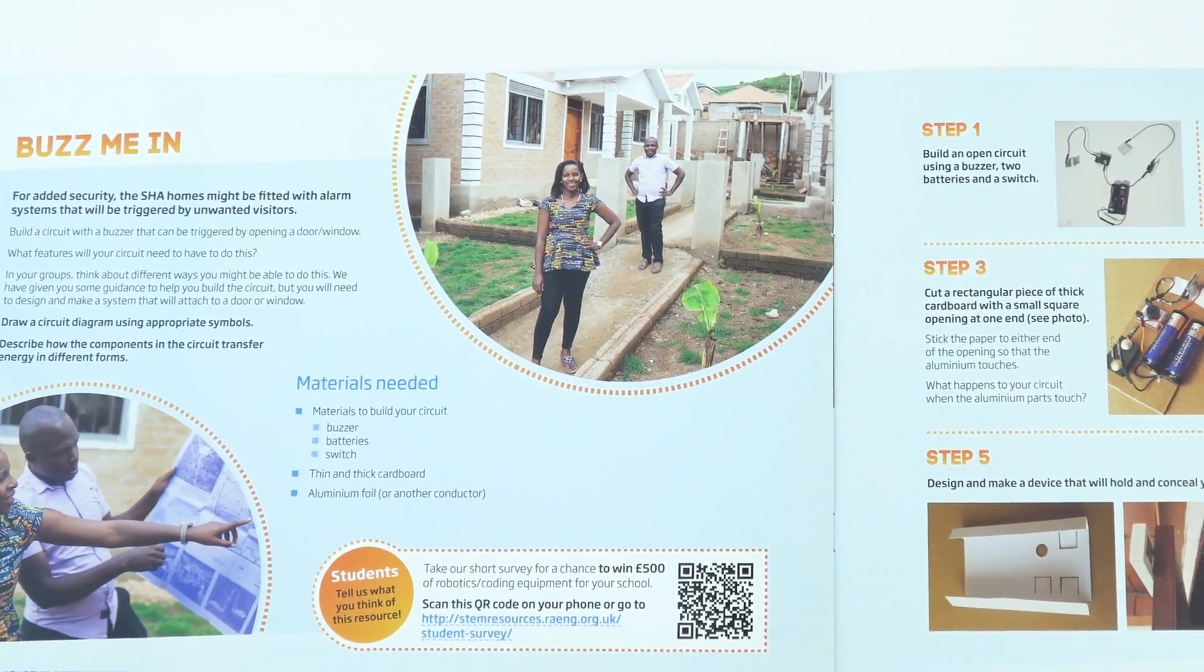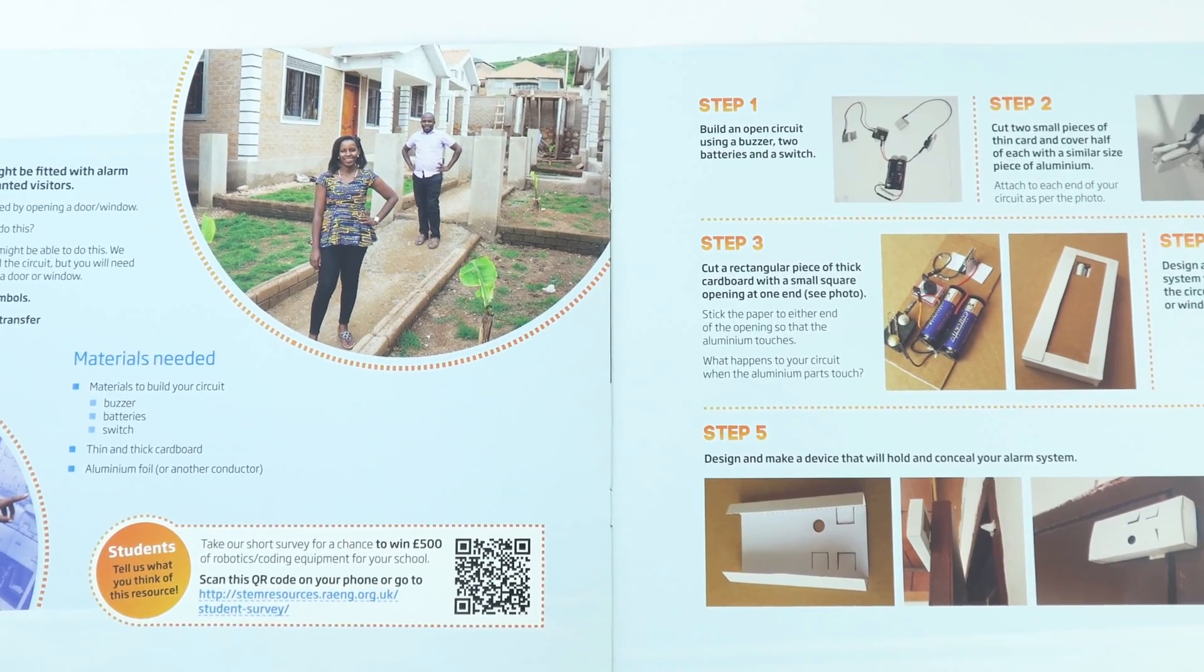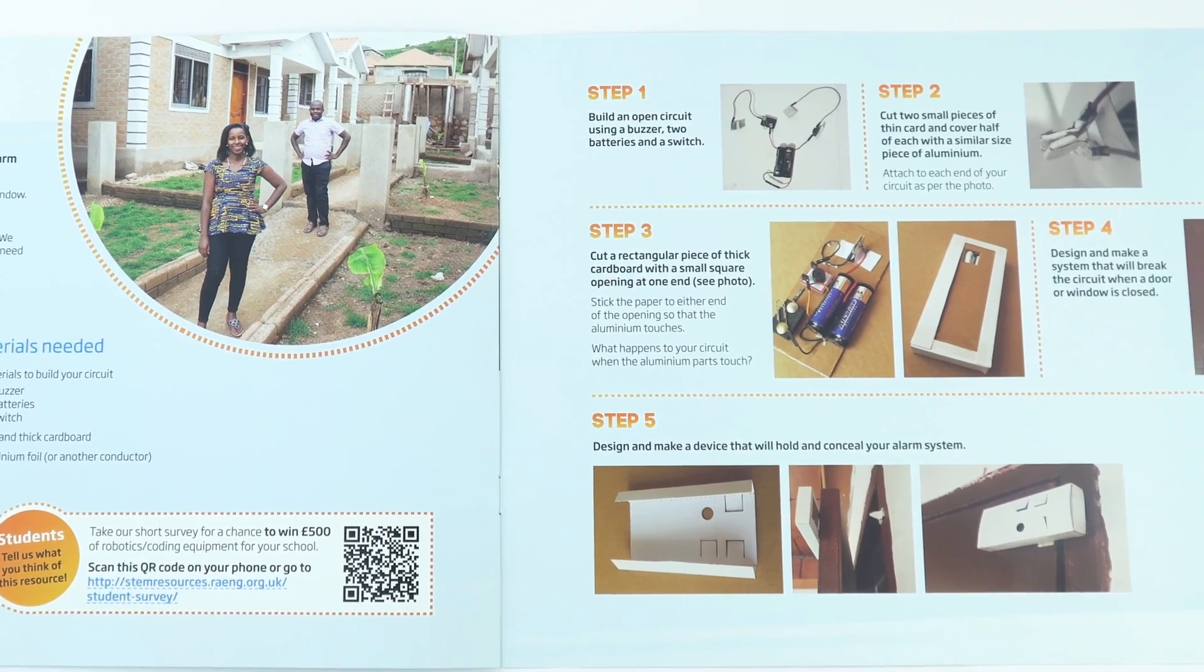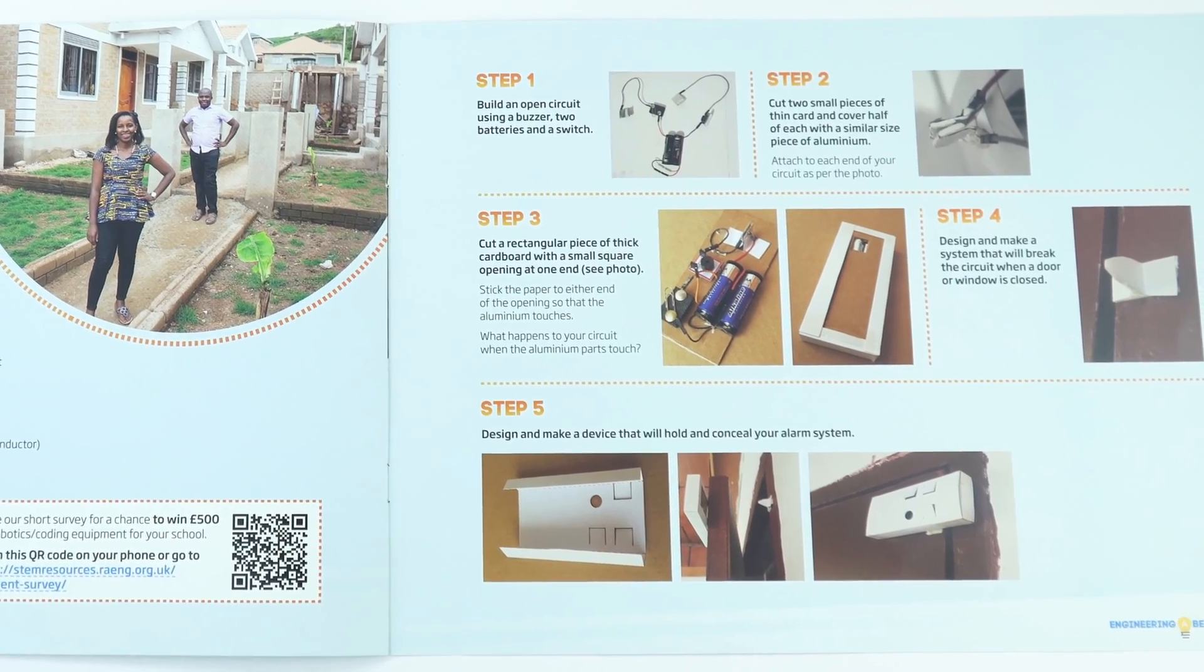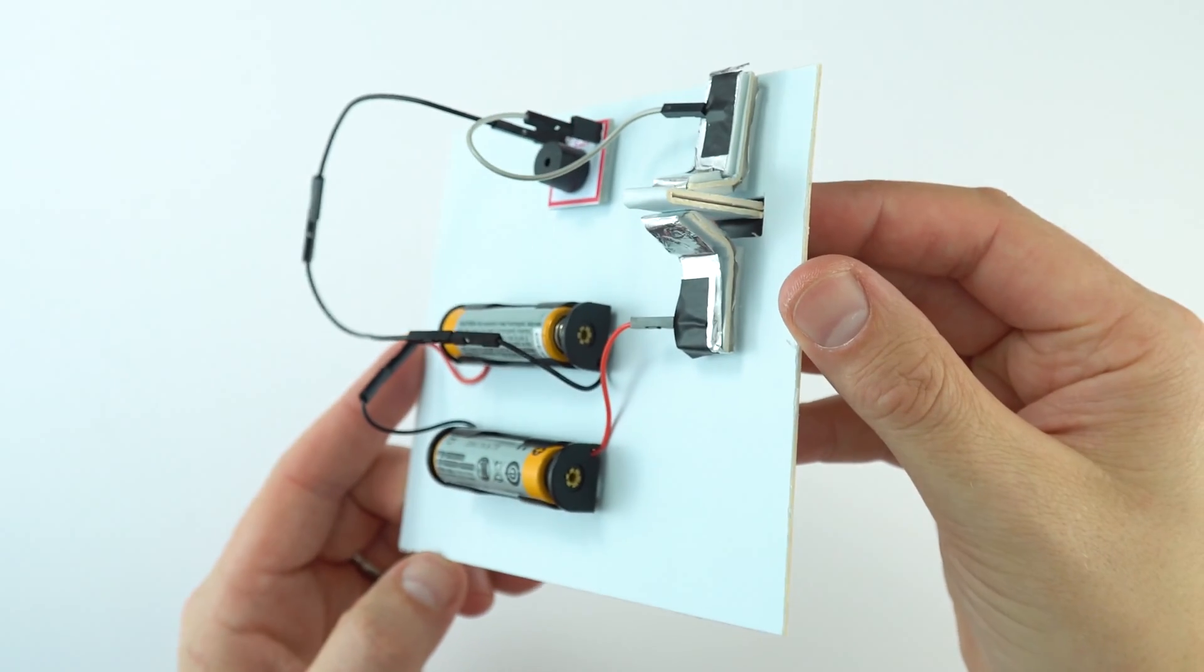People want to feel safe in their homes, so the next practical task is for students to create a buzzer system that operates when a door is opened. This was made using the Dext kit, so we've got a buzzer, a couple of batteries, and actually you've got to make your own switch.